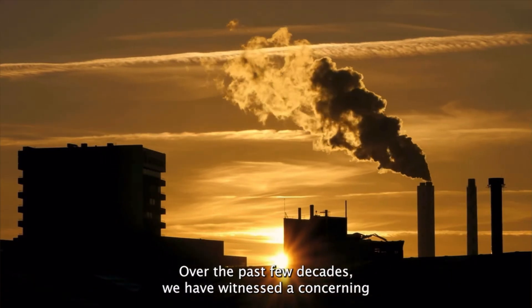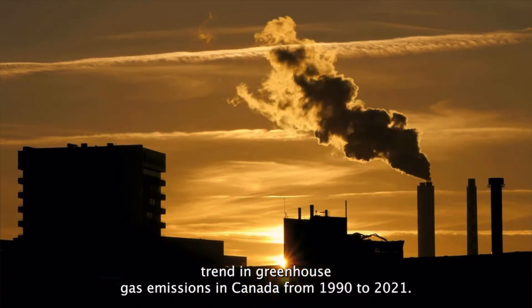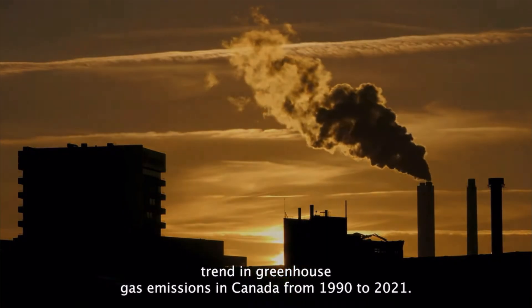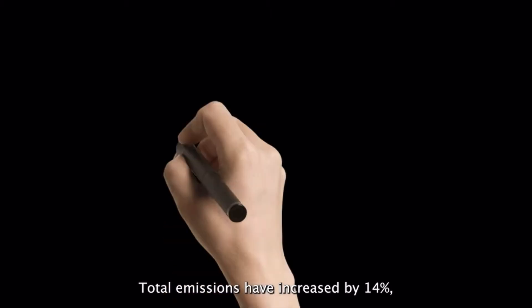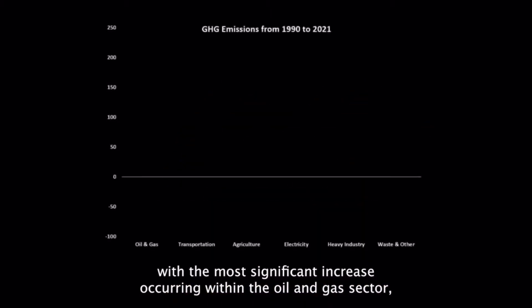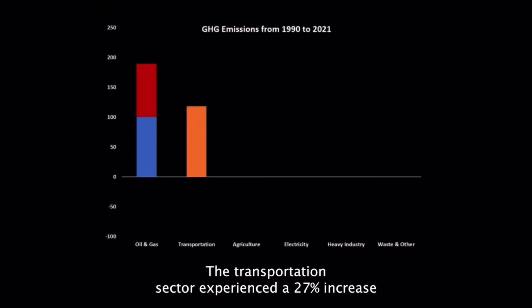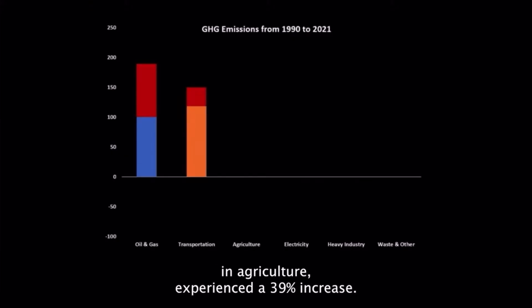Over the past few decades, we have witnessed a concerning trend in greenhouse gas emissions in Canada. From 1990 to 2021, total emissions have increased by 14%, with the most significant increase occurring within the oil and gas sector, which saw an alarming 88% rise in emissions. The transportation sector experienced a 27% increase, and agriculture experienced a 39% increase.